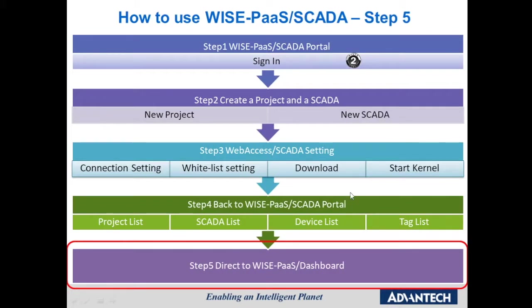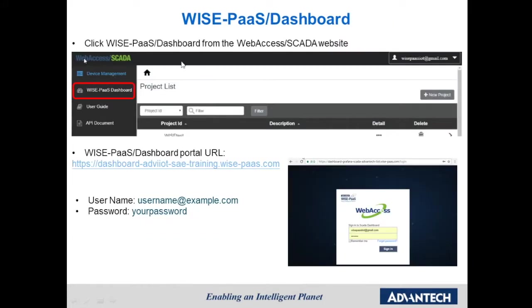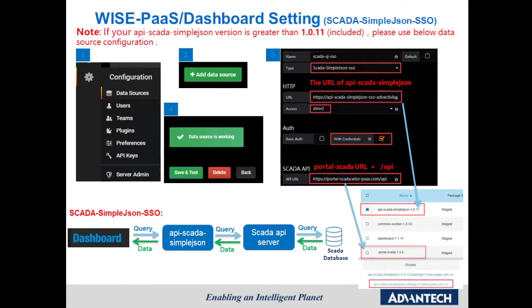The last step is to go to WISE-PaaS Dashboard to design your dashboard panels. Click WISE-PaaS Dashboard from the WebAccess SCADA website, or use the URL to log in to your dashboard website. After login, configure a data source: go to Configuration, select Data Source, and click Add Data Source. Choose the data source type, which depends on the version of your API SCADA Simple JSON. Go back to your management portal and check the version of your API SCADA Simple JSON.